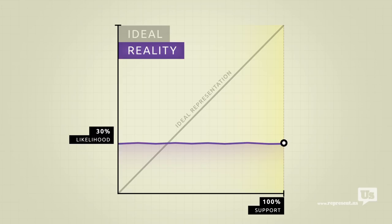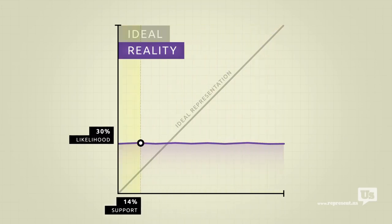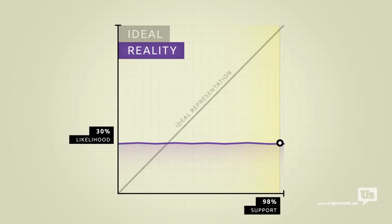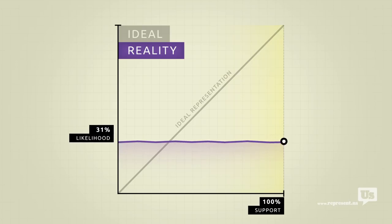This means that the number of American voters for or against any idea has no impact on the likelihood that Congress will make it law.